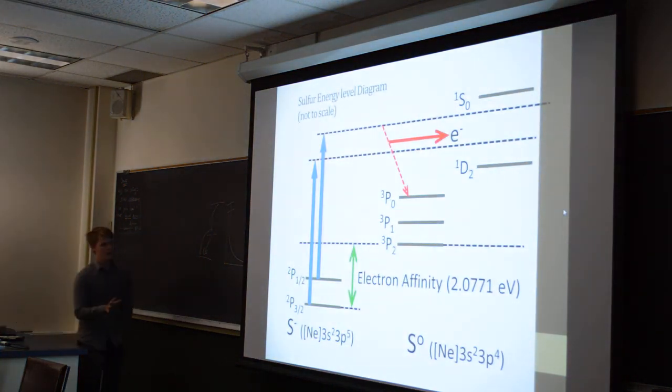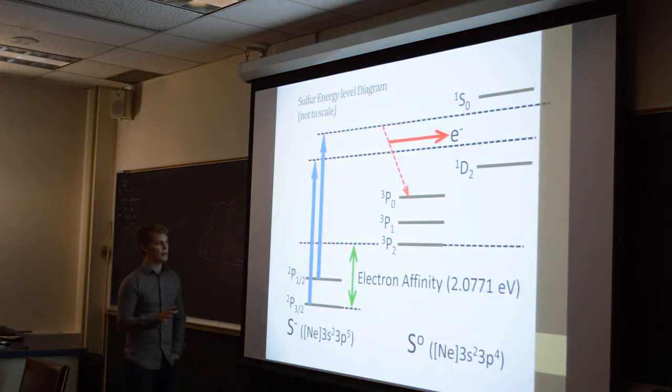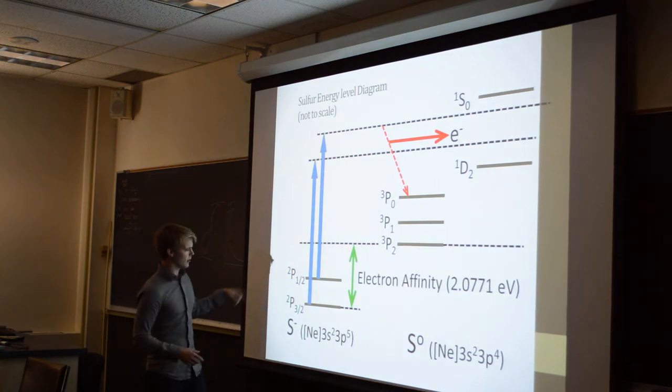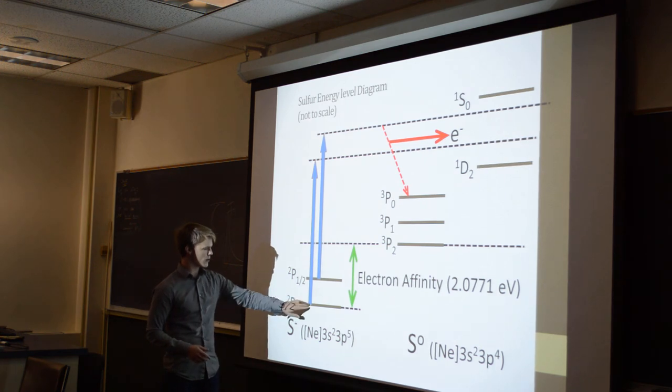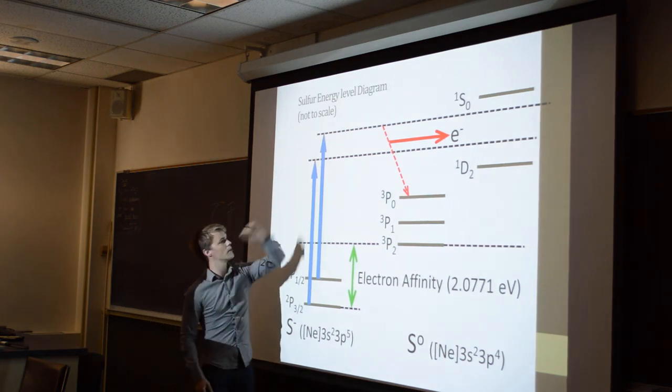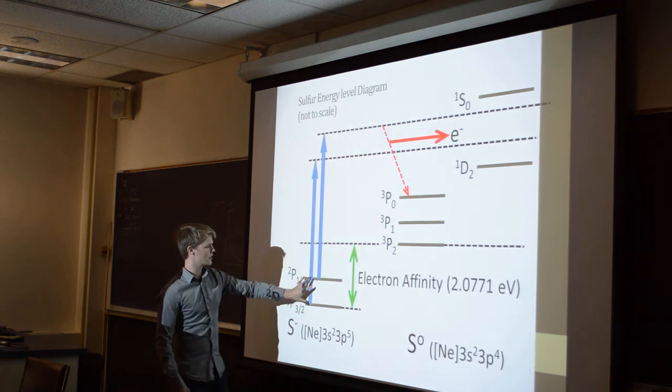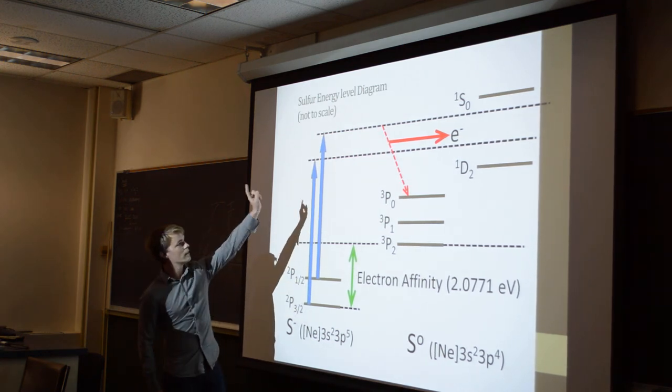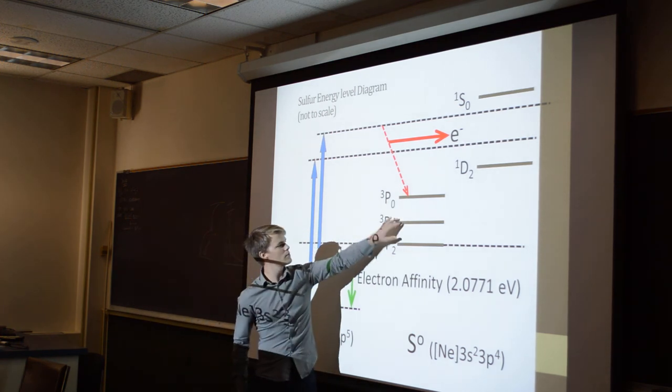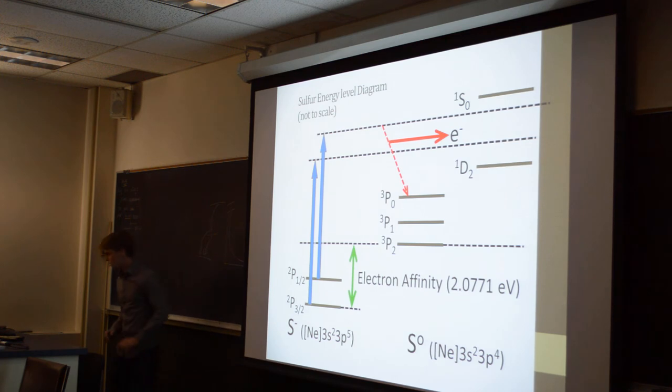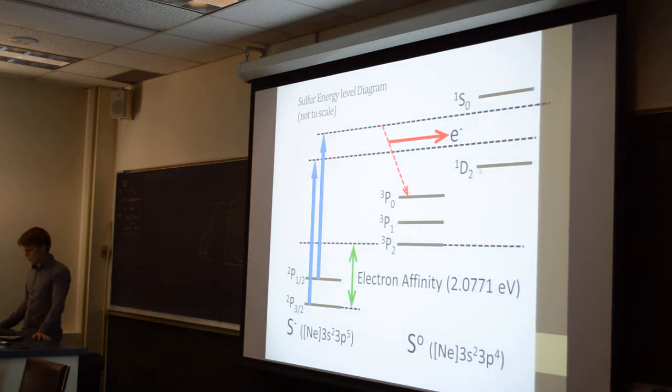So this is a picture of an actual transition. The photon comes in and excites this electron up to here. So this is the negative ion state. And then the energy can decay toward these states. This is just a picture of one of the many possible transitions. And then the energy difference is the kinetic energy of the photodetached electron.